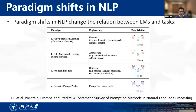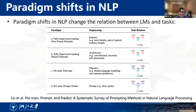First, let's review the development of paradigm shifts of NLP. Major NLP tasks include classification, generation, and tagging, and rely heavily on feature engineering, as fully supervised datasets are insufficient for learning high-quality models. With the development of neural networks, natural language features are learned by training models with different architectures.